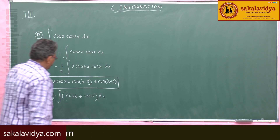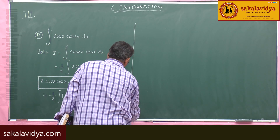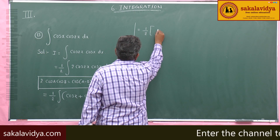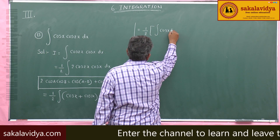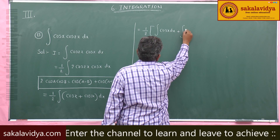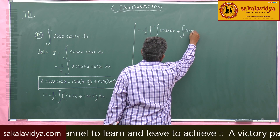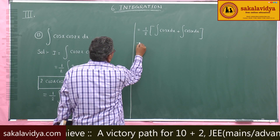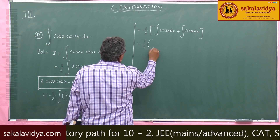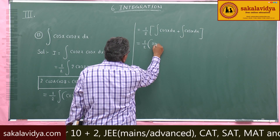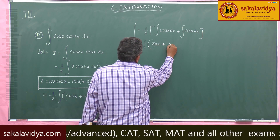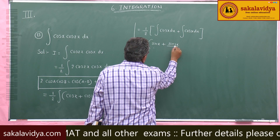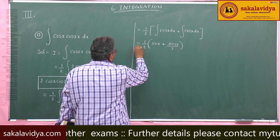Let us separate the integrals: 1/2 times integral of cos x dx plus integral of cos 3x dx. The integral of cos x is sin x, and the integral of cos 3x is sin 3x — but since the derivative of 3x is 3, we divide by 3.